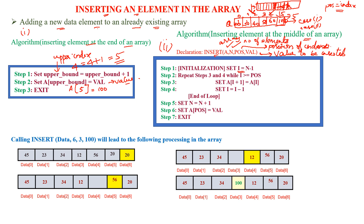Now how does the algorithm start? Step 1: set I equal to N minus 1. N is the number of elements — taking the same example, N equals 5, so I equals 4. Step 2: repeat steps 3 and 4 while I is greater than or equal to position.